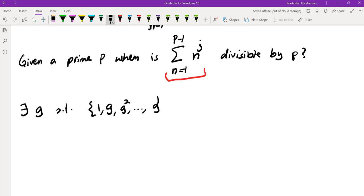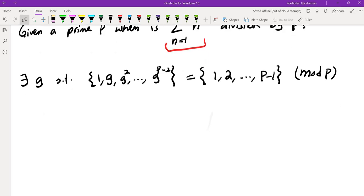So there is some G such that the set {1, G, G^2, ..., G^(P-2)} is the same as the set {1, 2, ..., P-1} mod P. So mod P, these two sets are the same thing.